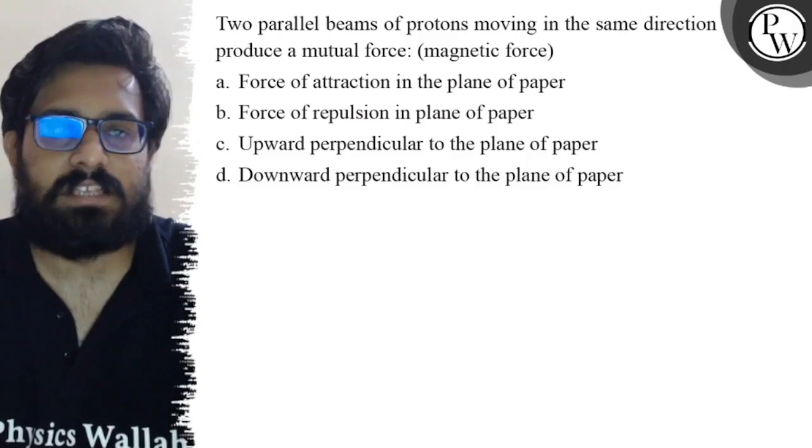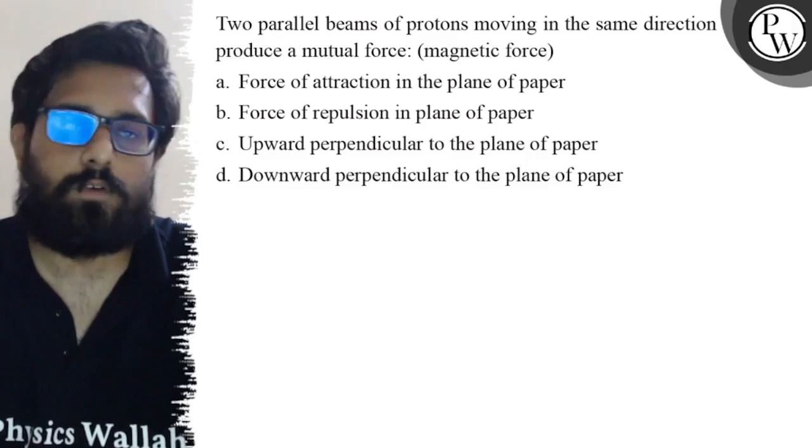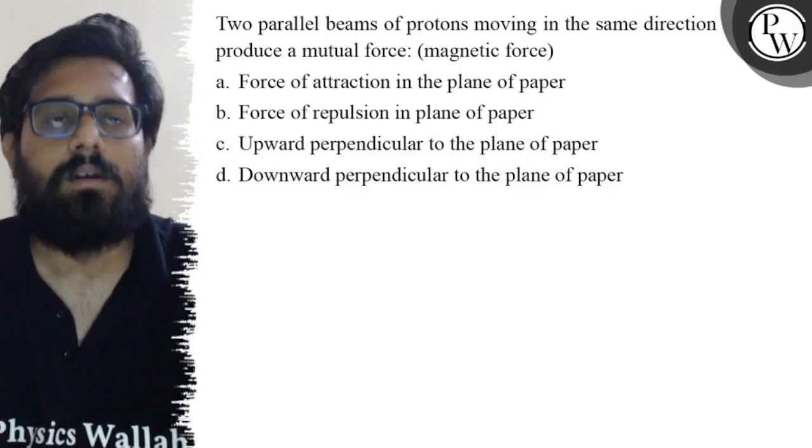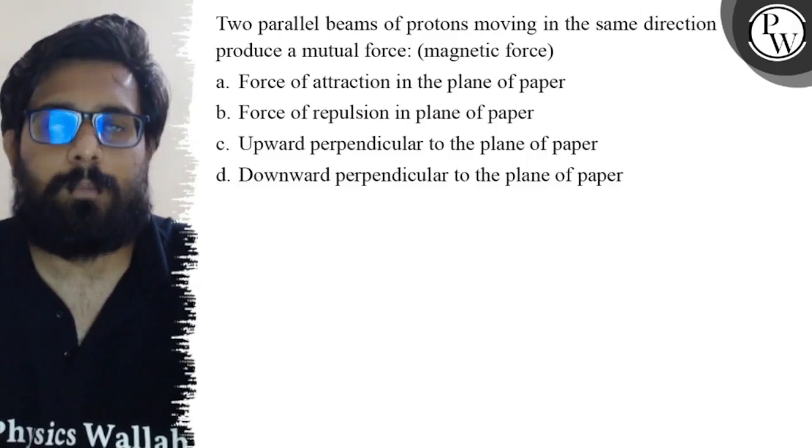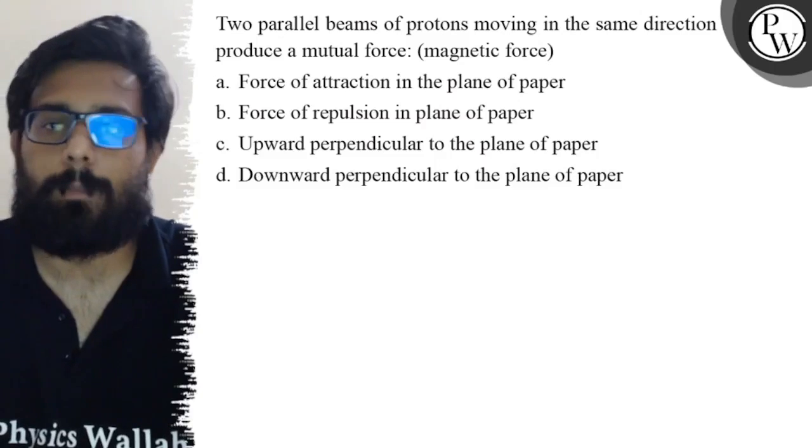Your first option says force of attraction in the plane of paper. Second option says force of repulsion in the plane of paper. Third option says upward perpendicular to the plane of paper, and your fourth option says downward perpendicular to the plane of paper.